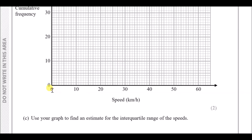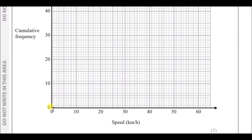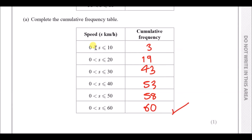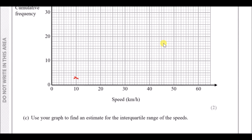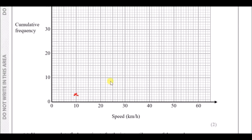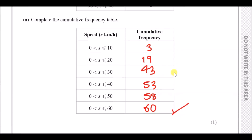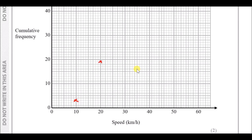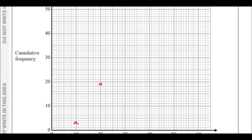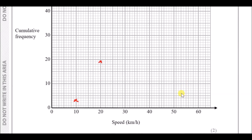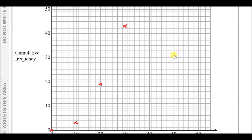Now draw a cumulative frequency graph. Plot cumulative frequency on the vertical axis against speed on the horizontal axis. At speed 10 we plot 3, at 20 we plot 19, at 30 we plot 43, at 40 we plot 53, at 50 we plot 58, and at 60 we plot 60. Start from zero and connect the points with a smooth curve.